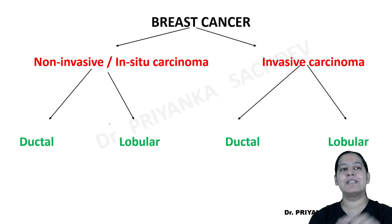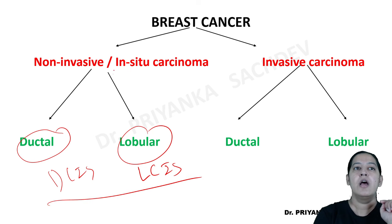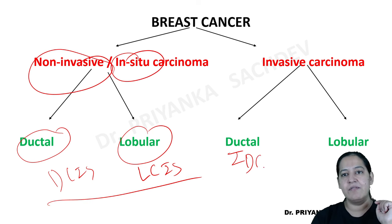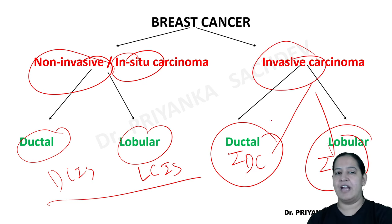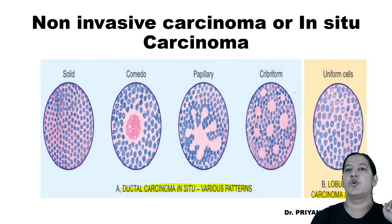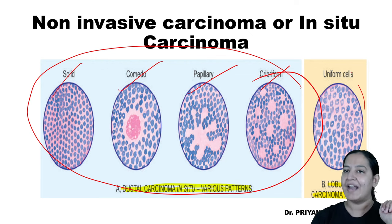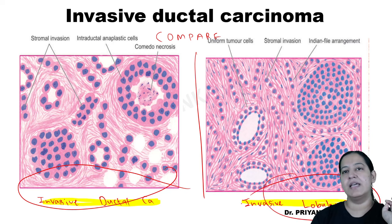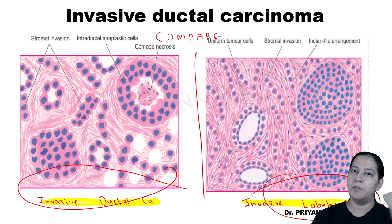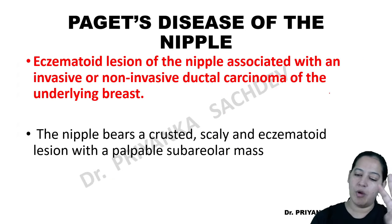Let me revise the four types. DCIS — ductal carcinoma in-situ; LCIS — lobular carcinoma in-situ; both are non-invasive or in-situ carcinoma. Then IDC — invasive ductal carcinoma; and ILC — invasive lobular carcinoma; both are invasive. Ductal in-situ carcinomas have four types: solid, comedo, papillary, and cribriform. Lobular is only one type — solid. In IDC, tumor cells are in the stroma with no peculiar pattern. In ILC, there is a peculiar Indian file pattern.